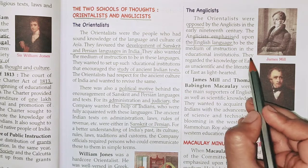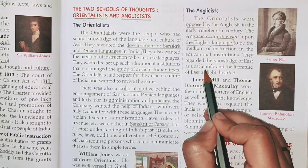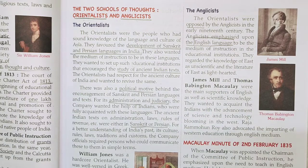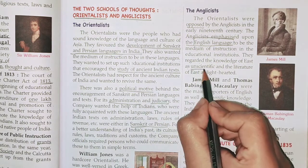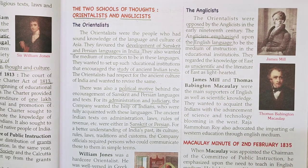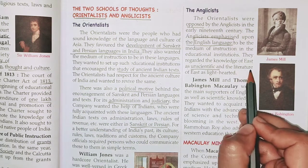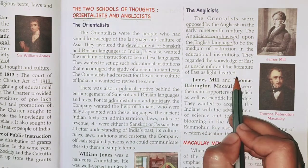The Anglicists regarded the knowledge of the East as unscientific — meaning people of Asian countries were not considered to have scientific temperament. They thought that people of the East did not think scientifically or practically, and they regarded the literature of the East as light-hearted.